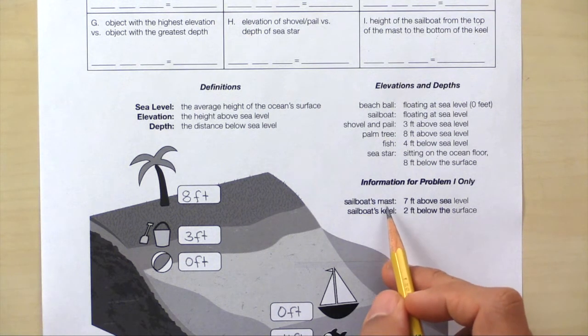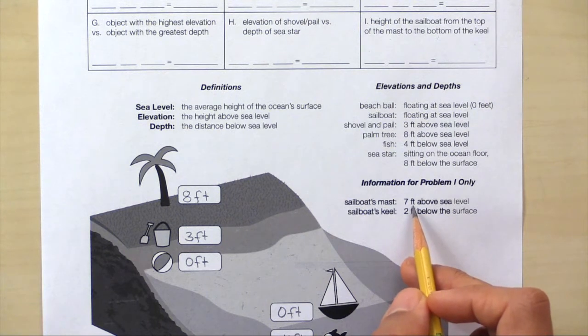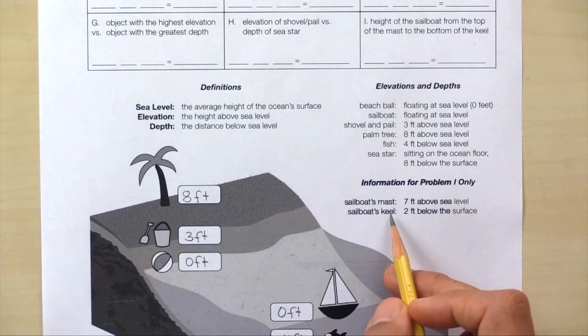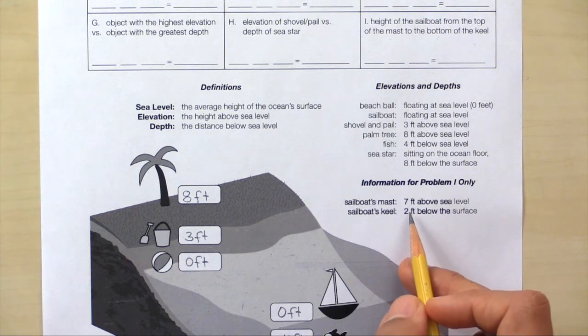And notice that the top of the mast is 7 feet above sea level. That's positive 7. The keel is 2 feet below the surface. That's negative 2. So we need to find the difference between positive 7 and negative 2.